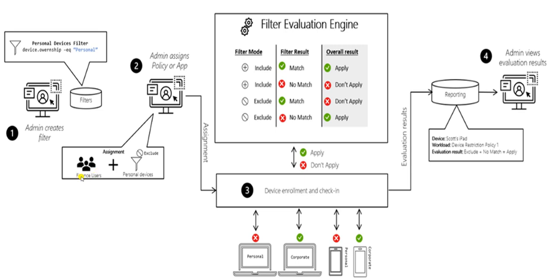Here's what happens when we assign the filter. We assign it to finance users and personal devices are excluded. The filter works based on its mode: if it's set to include and the device matches the filter, the policy is applied. If it's include but there's no match, it won't be applied. If it's exclude and it matches, it won't be applied. If it's exclude and no match, it will apply.